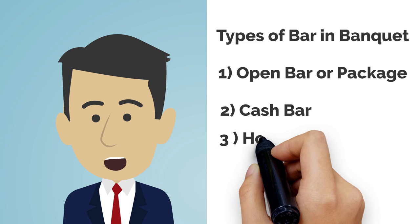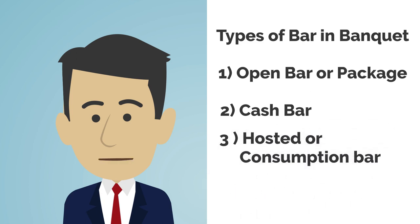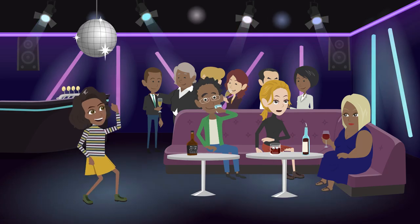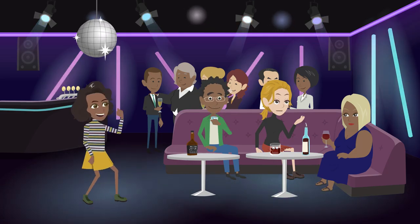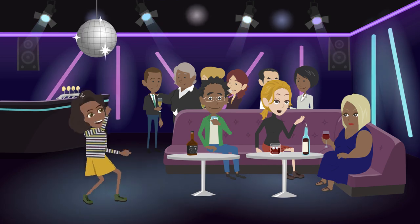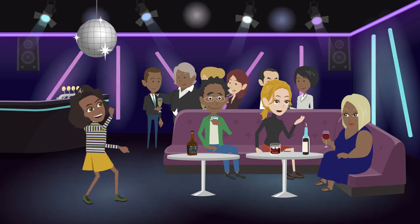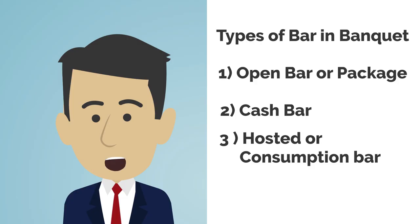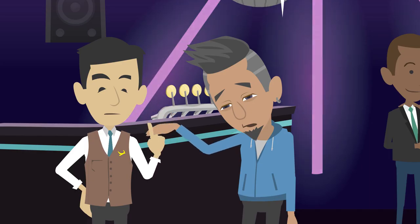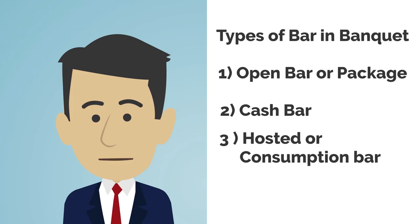The third type of bar is the hosted bar, which is charged to the host on a consumption basis. The host or meeting planner will only pay for the actual consumption, and you will be required to show and count the empty bottles before billing. There may be a time when guests will also enforce a limit on the number of drinks to be served, like three beers or three small drinks.